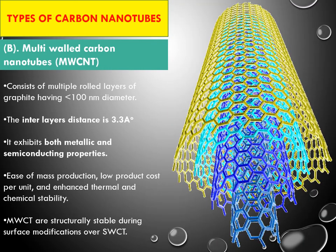Multi-wall carbon nanotubes consist of multiple rolled layers and have an overall diameter less than 100 nanometers, keeping them in the nanoscale. There are many layers present — that's why it is called multi-wall carbon nanotubes. The interlayer distance is 3.3 angstroms, which equals 0.3 nanometers.